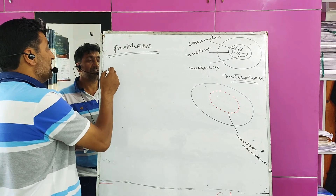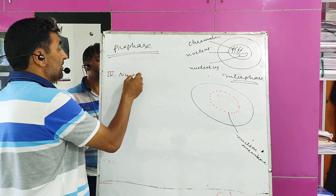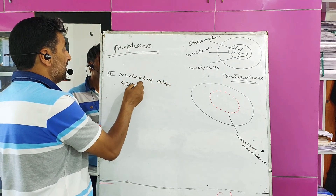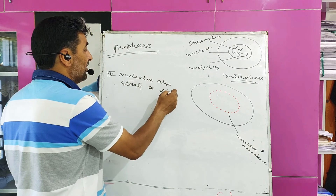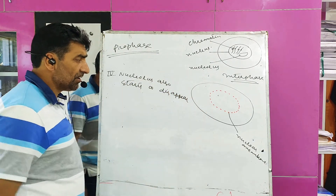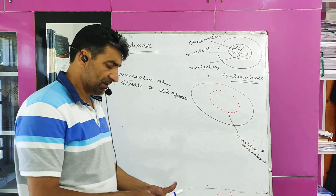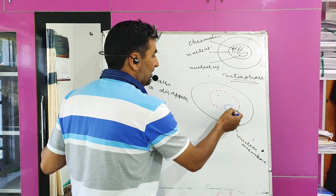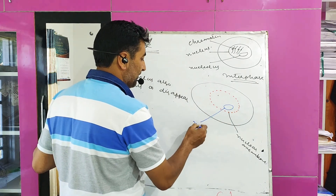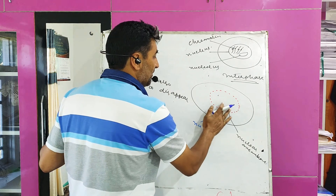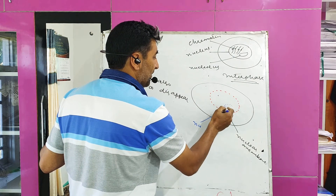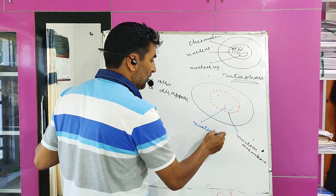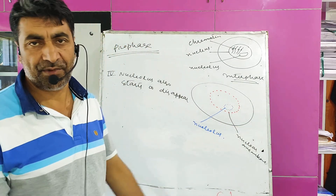Next change: nucleolus also starts to disappear. As you know, nucleolus is the little body present inside the nucleus. I will show it here in dotted lines as well. Nucleolus also starts to disappear.